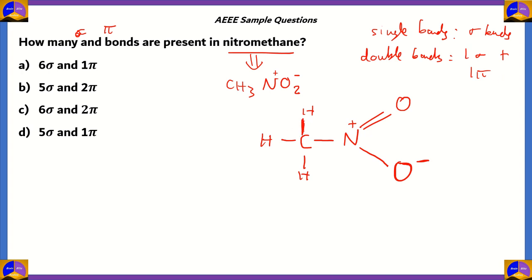Basically, we have five single bonds, so that means you have five sigma, and in a double bond there will be one sigma and one pi. That means the total number of bonds are six sigma bonds and one pi bond. So that means option A, six sigma and one pi is the correct answer.